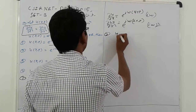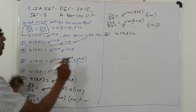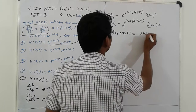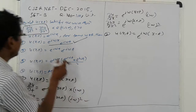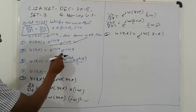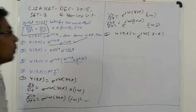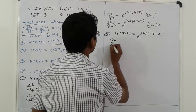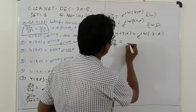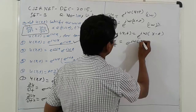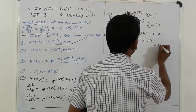Second option: u(x,t) is equal to e raised to iω(x−t), where iω is common and the argument is x minus t. So ∂u/∂t equals e raised to iω(x−t) into minus iω, because the derivative of (x−t) with respect to t is minus one.